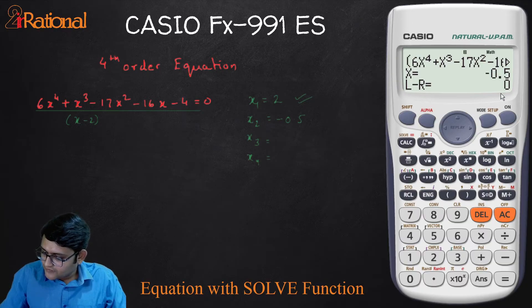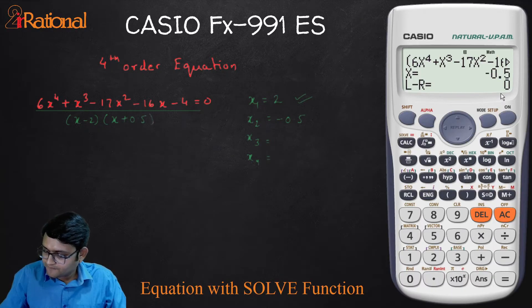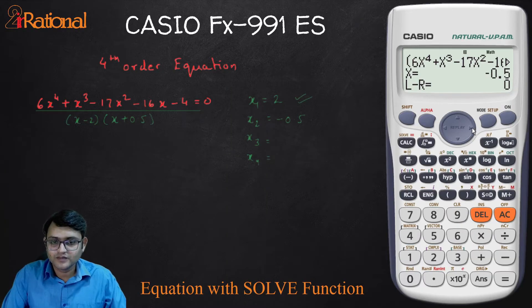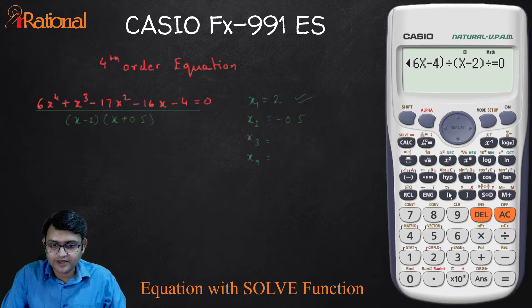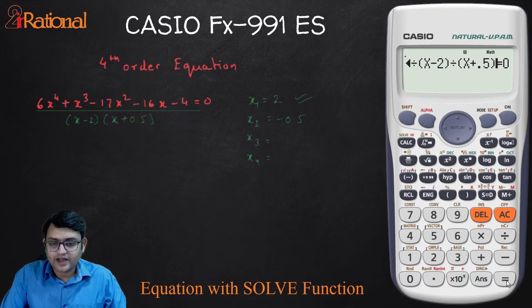To get the next one, I will now divide this by X minus of minus 0.5. So that would be plus 0.5. Again, press the side arrow key. So divide by bracket X plus 0.5. And press equal to.